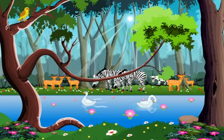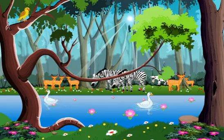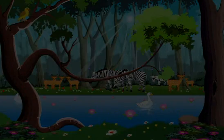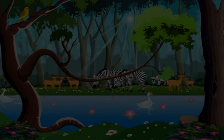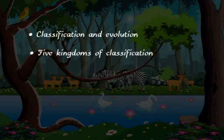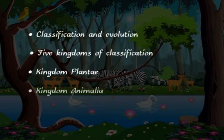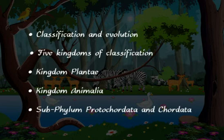This is the reason why various scientists have made attempts to classify the whole living world into different groups. To know more about the classification of various organisms found in this living world, let us study this chapter in detail. The topics we will be covering here are: Classification and Evolution, Five Kingdoms of Classification, Kingdom Plantae, Kingdom Animalia, Subphylum Protocordata, and Chordata.